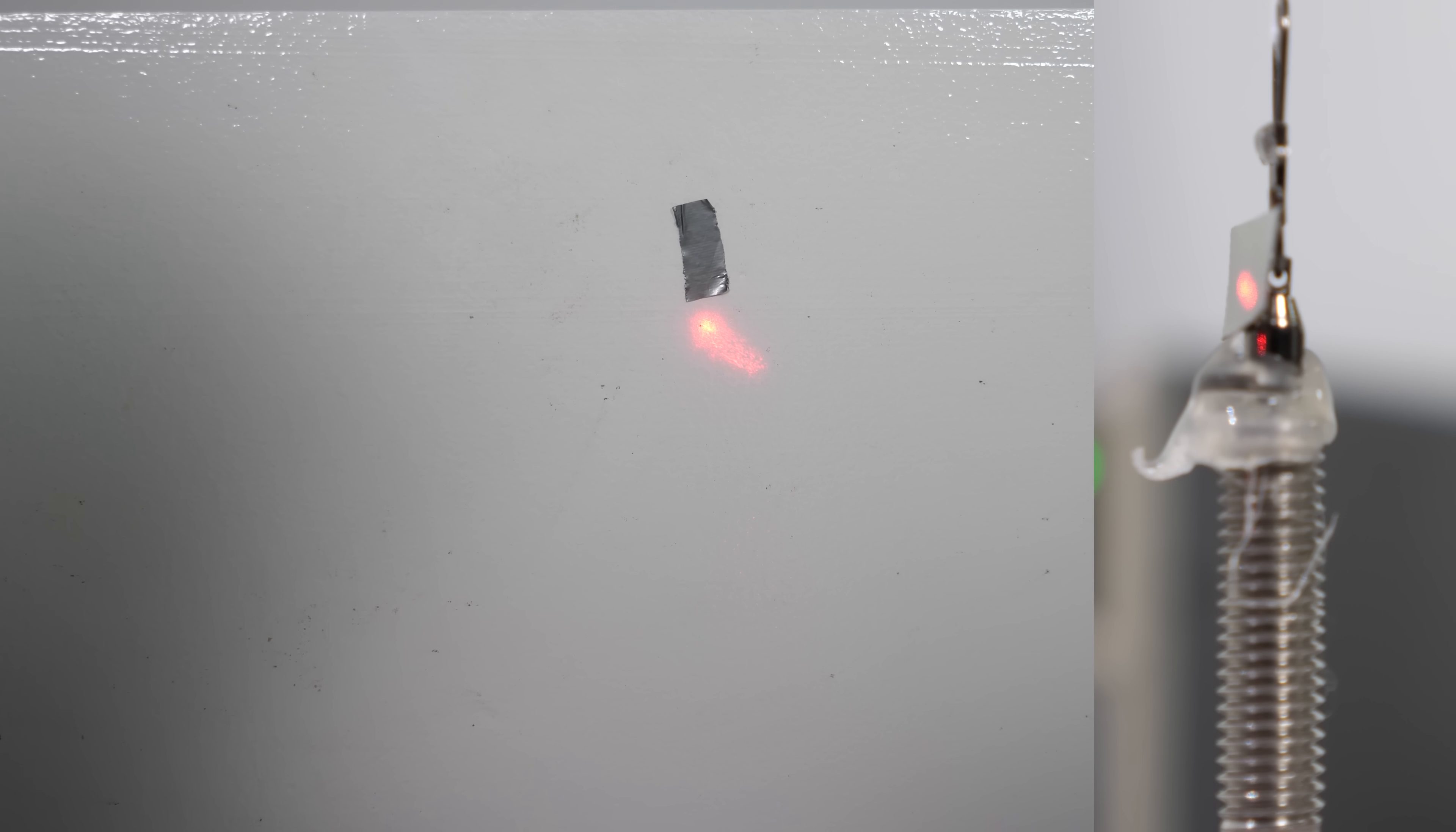Now if I reverse the current, the magnetic field flips, and sure enough, the bolt rotates in the opposite direction. This is so crazy. We're literally seeing a macroscopic effect of electron spin.